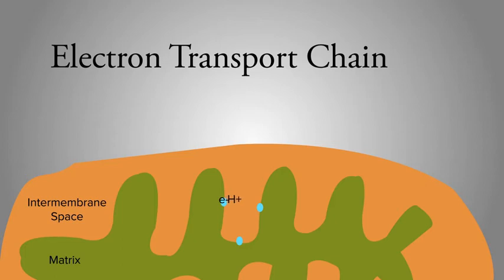Protons are moved across the membrane. As electrons move down the electron transport chain, new protons are moved across the membrane into the intermembrane space.